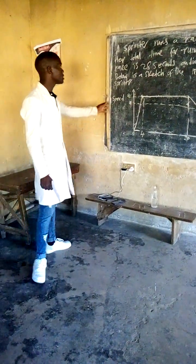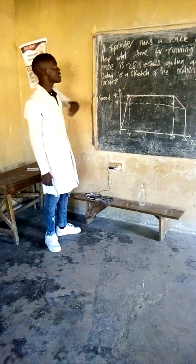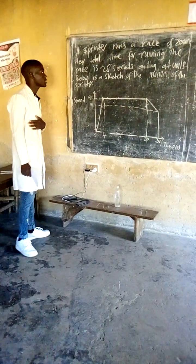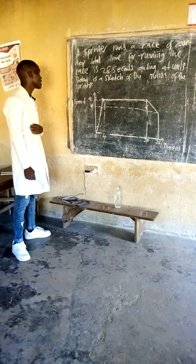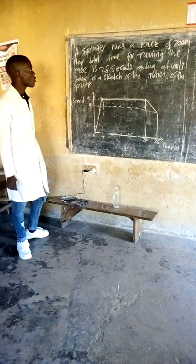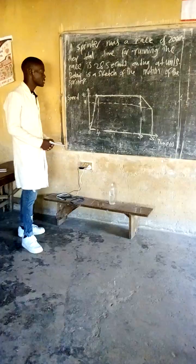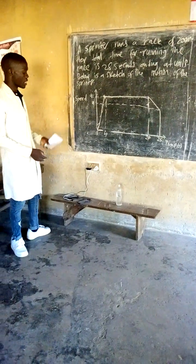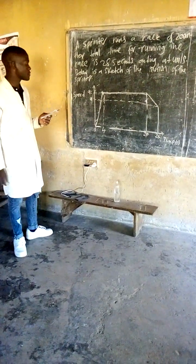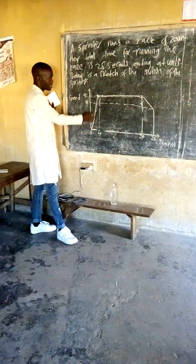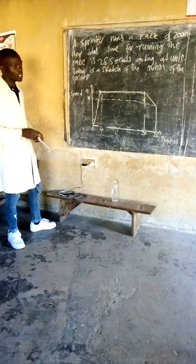We have a question on the board about the motion of a sprinter. The question says a sprinter runs a race of 200 meters. The total time for running the race is T seconds, and the speed is 9 meters per second. Below is a sketch of the motion of the sprinter. The first question says calculate A, the acceleration in the first 4 seconds — meaning calculate the acceleration of this slope. This slope shows that the acceleration was constant.